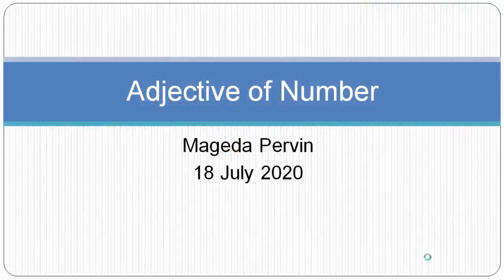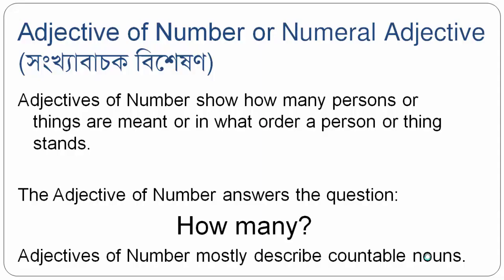Now let's start adjective of number, also called numeral adjective. In Bengali, 'shankha bachok visheshan'. Adjectives of number show how many persons or things are meant, or in what order a person or thing stands.